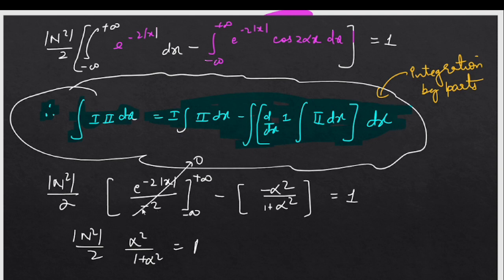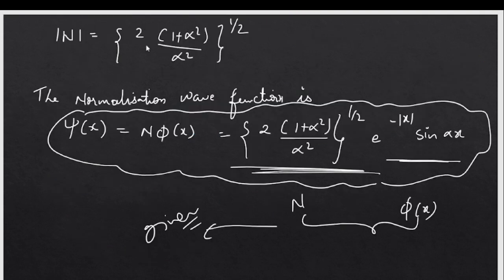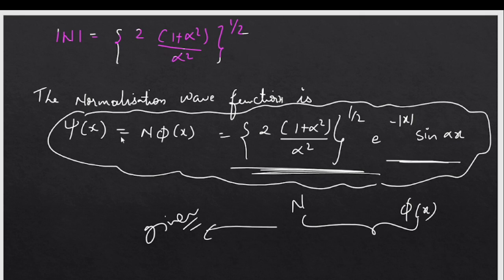After working through the integration by parts, we get the first function with its value and the second function's integral. We have alpha terms: minus alpha squared over (1 + alpha squared). The boundary terms vanish because x goes to plus or minus infinity, so the function is 0. We are left with mod of N² over (2·alpha² · (1 + alpha²)) = 1.